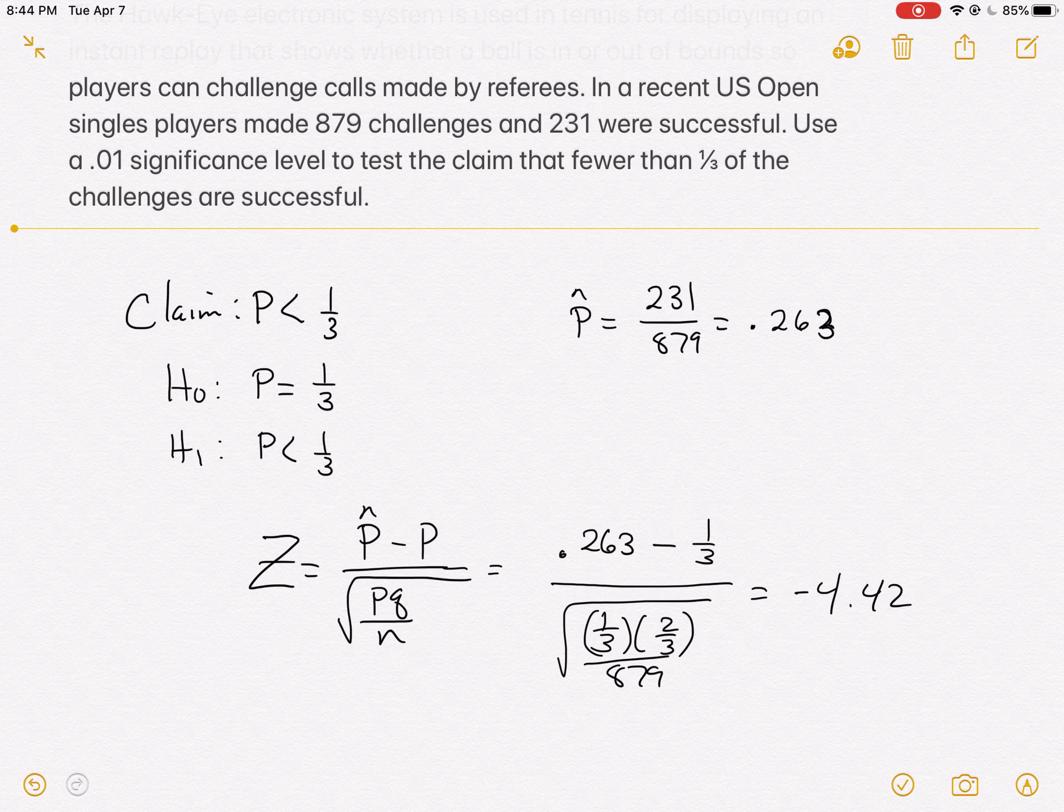What's awesome is we could stop right here and just check in the back of the book to make sure that we're doing okay. Looking at number 20, it says our H naught should be p equals 1 third - that's check. Our alternative hypothesis should be less than 1 third - check. Our test statistic should be negative 4.44, and so that's a little bit off, but the reason for that is because of my rounding off of the p hat. We're really close, and so we're good with that answer.